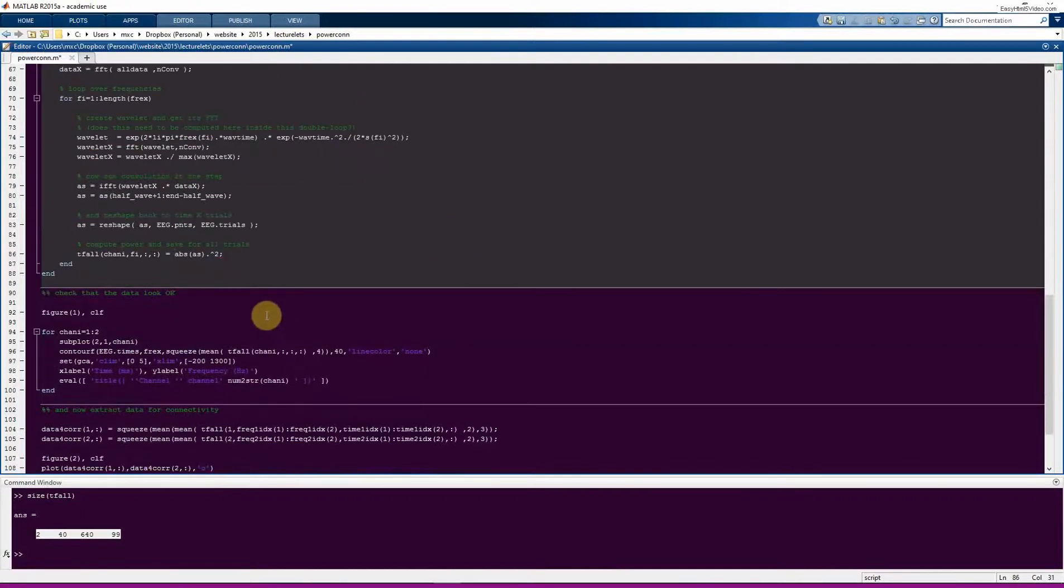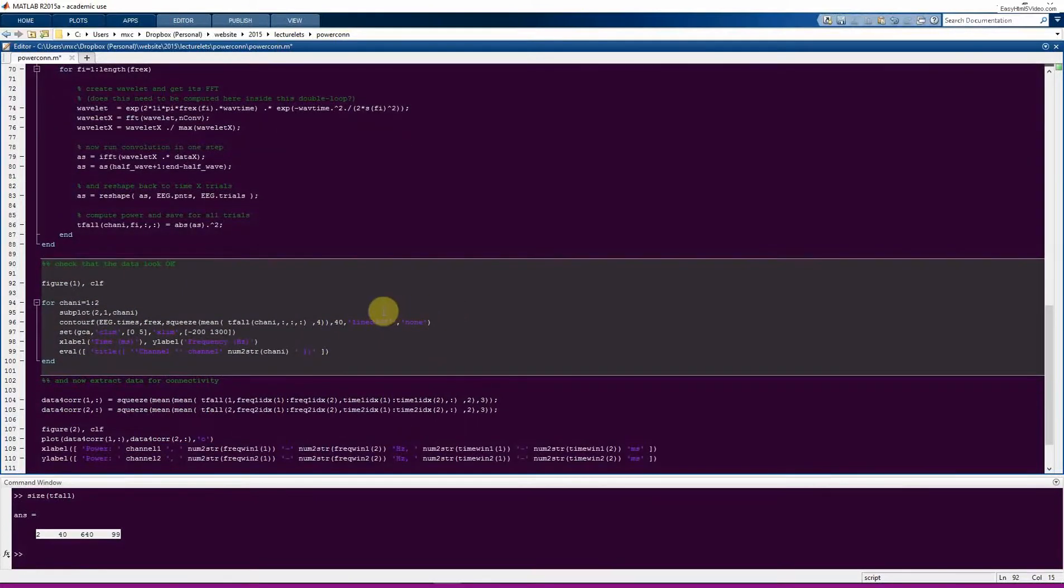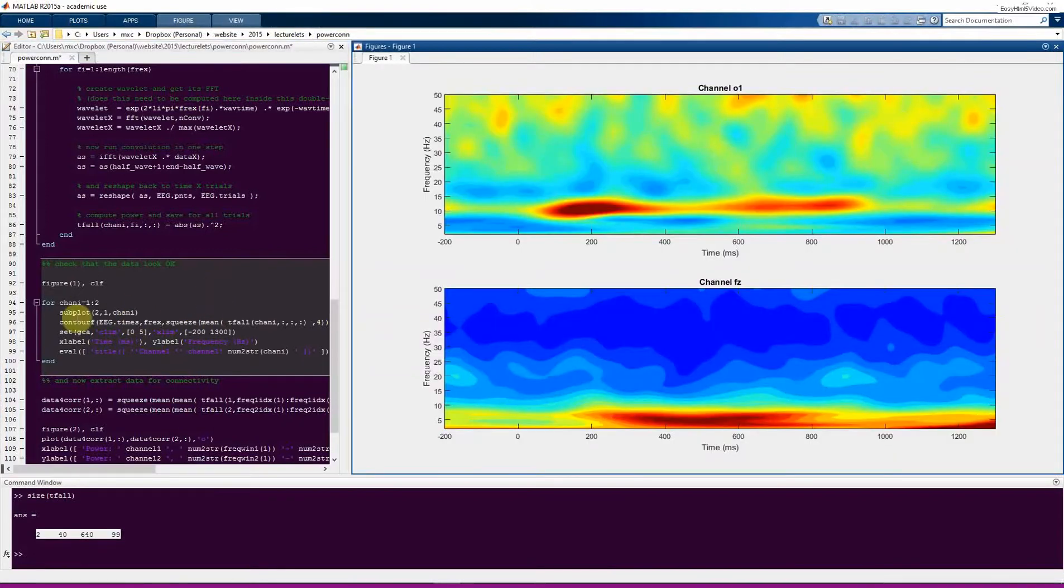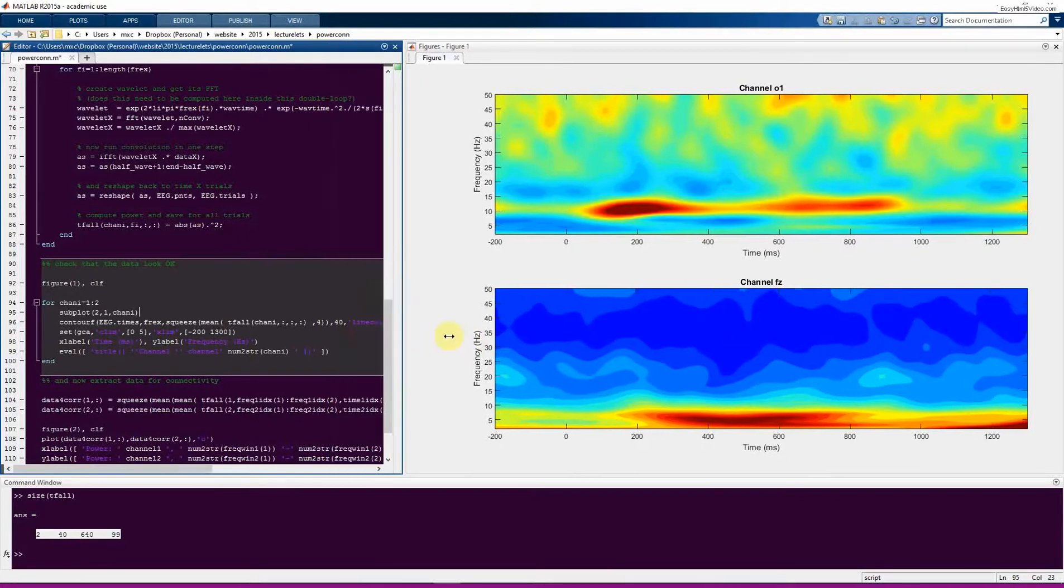So before going on and computing the connectivity analysis, it's good to do a bit of a sanity check and look at the data and make sure that it seems plausible. So that's what this line of code does. We just make these two contour plots. And really, you just want to look at this and make sure that when you average over trials, and now here I'm averaging the data over all the trials. This is the raw powers, no normalization or anything. If you just saw total junk in these plots, then you certainly shouldn't trust the connectivity results. So it's just a bit of a sanity check that the code works.